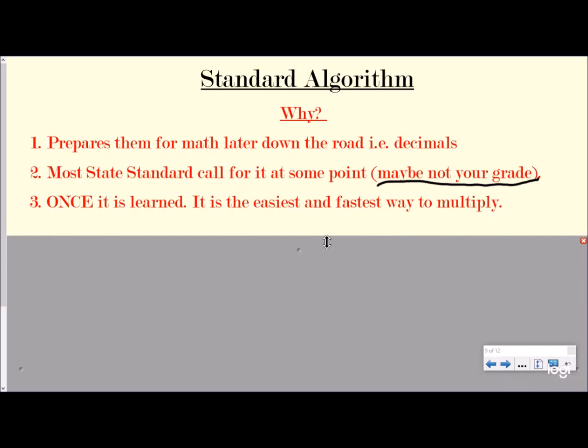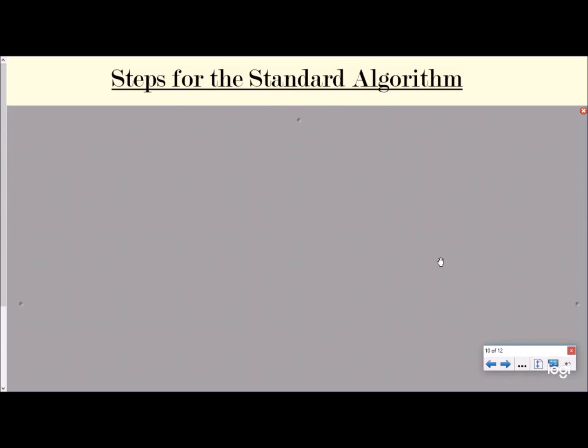And then obviously once it's learned, it's the easiest and fastest way to multiply. So it may be the hardest way to learn how to multiply because you have to learn about regrouping and adding your zero, whatever the case may be. But once it's learned, it is the fastest way. And eventually, let's say we're taking a state test, if kids are spending 20 minutes on a multiplication problem because they're trying to draw their box, that's energy and effort taken out from other problems. So we want to make sure we're teaching them not only for future grades, but also we want it to be the easiest and fastest way possible. Obviously this does not teach conceptually what's happening, which is why I say we introduce it with the open array or the partial products.